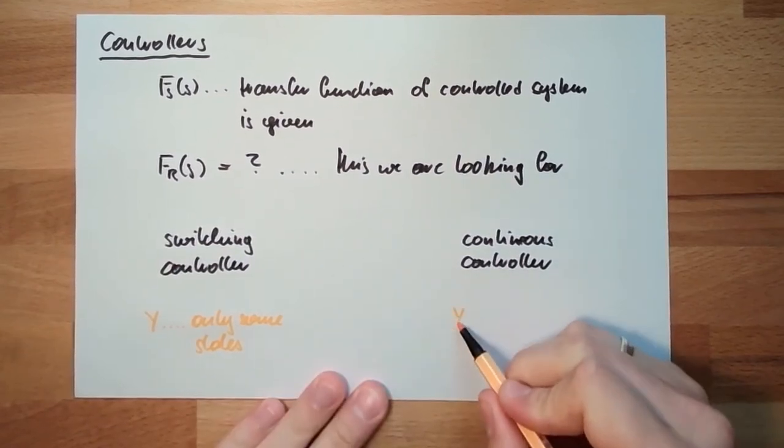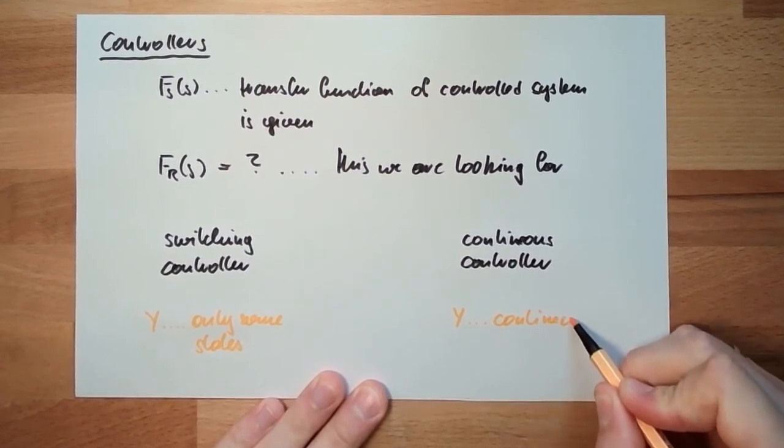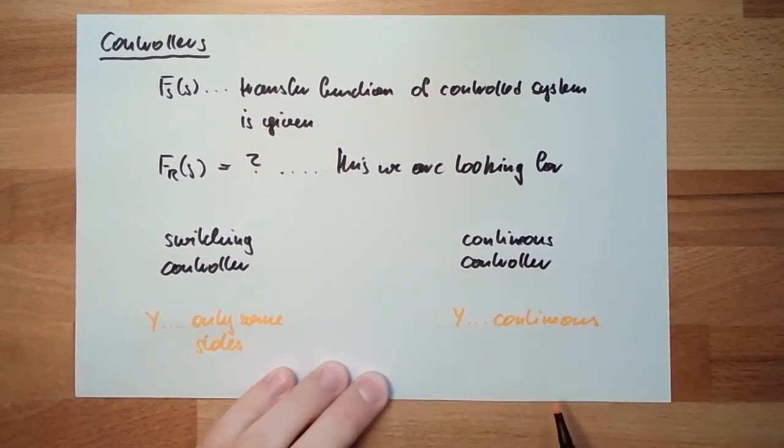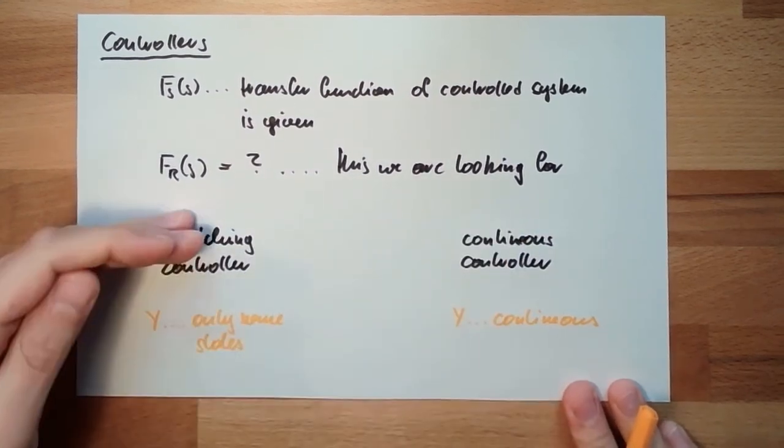And here the correcting variable is continuous. This is why this is called continuous controller. This is switching controller.